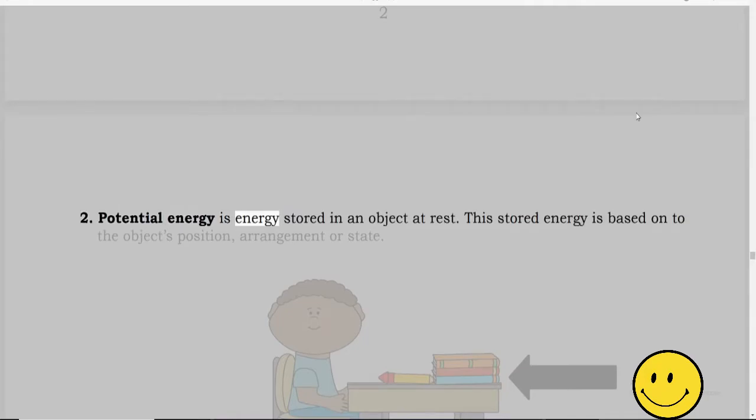Potential energy is energy stored in an object at rest. This stored energy is based on the object's position, arrangement, or state.